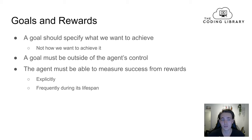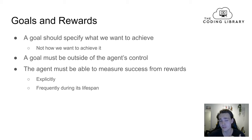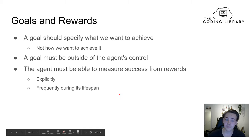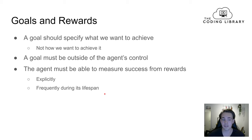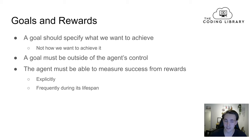Next we're going to talk about goals and rewards in reinforcement learning. A goal should specify what we want to achieve, not how we want to achieve it. A goal must be outside the agent's control — we set the goal and the agent tries to reach it, not modify or control it. The agent must be able to measure its success from the rewards it receives, either explicitly or frequently during its lifespan, trying to maximize those rewards.